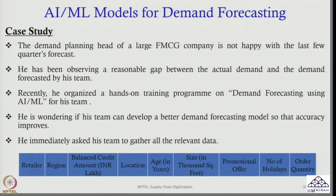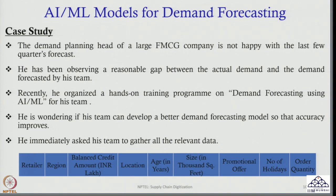There is an important parameter: balanced credit amount — that means how much balance credit amount is with them, measured in INR lakh. Then location: although we are capturing region, within the region location is also important — whether the retailer is located in an urban area, semi-urban area, or rural area.